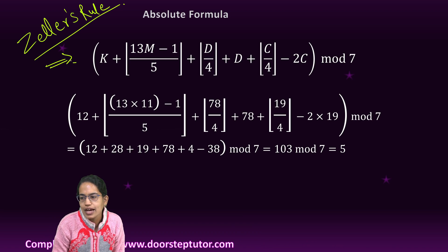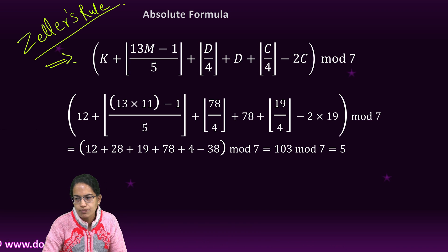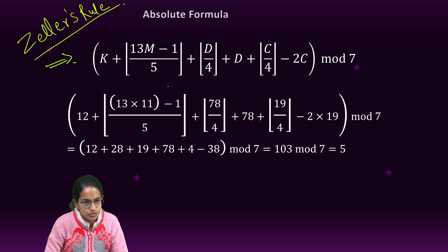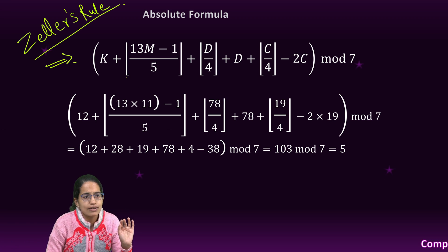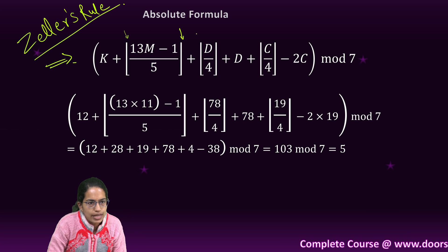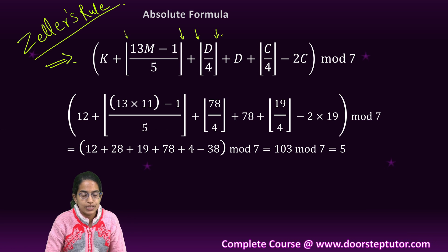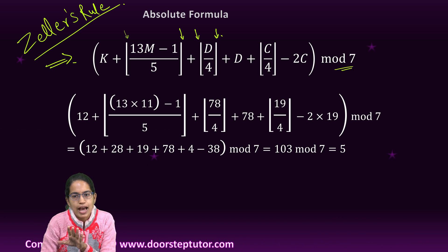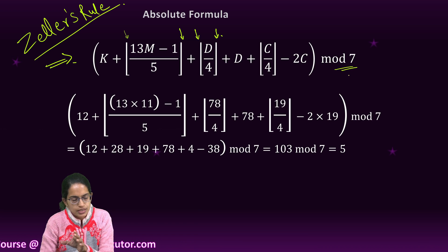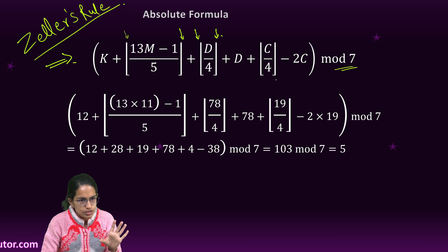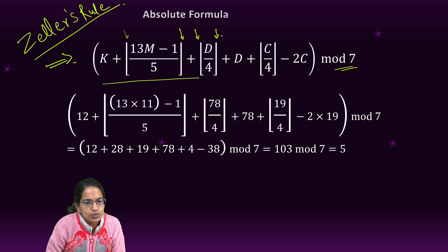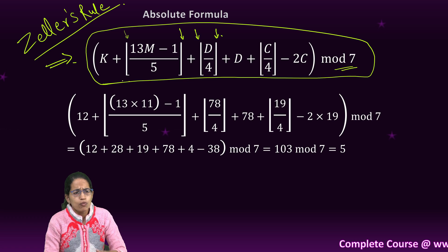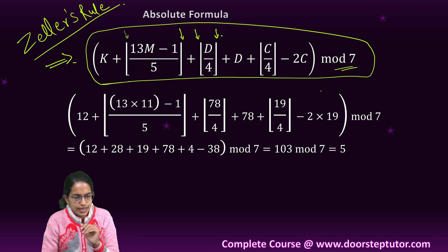This is the formula that you would have to remember. We should remember the floor values, and once we remember the floor values you would be able to attempt this question. Wherever I have put this sign, which is the sign of the floor value, that means any kind of remainder would be ignored. And then we have to take mod 7, that means only the remainder would be counted. You must ask, what is all this K, M, D? So we'll understand that in a while.